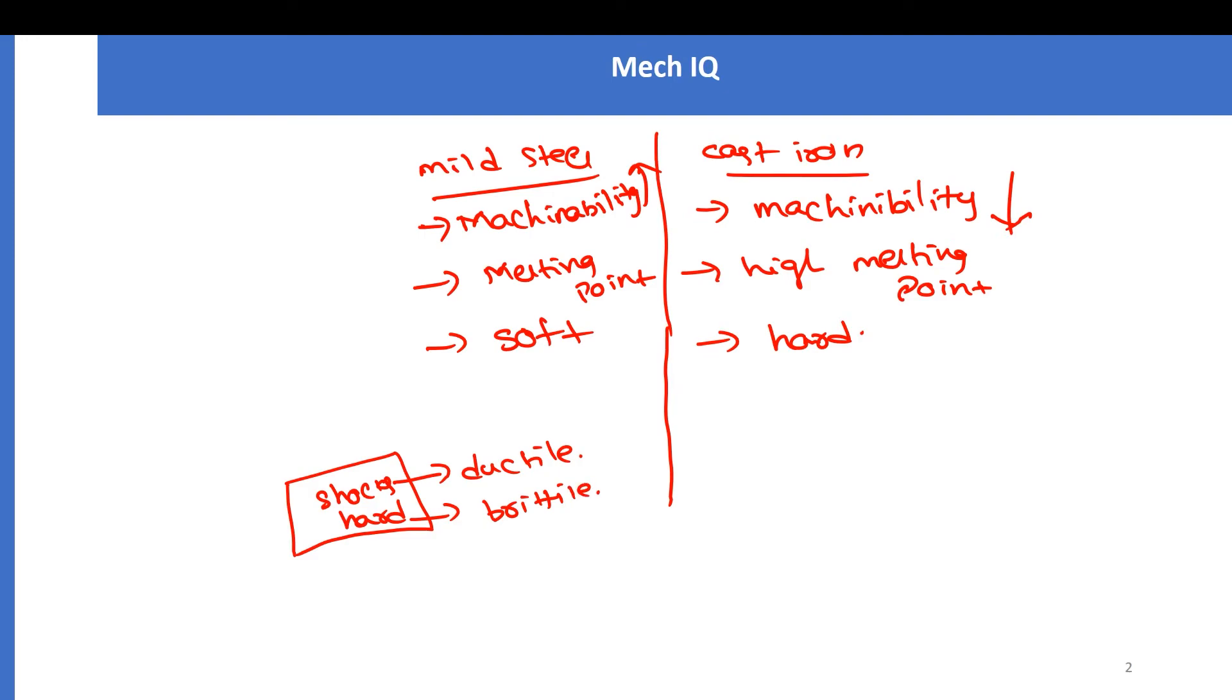There's a technique called case hardening, where the whole material will be made up of mild steel, and the tip of the tool is generally made up of cast iron. This is hard, so the machining will be great, and as this is mild steel, it will absorb the shocks.